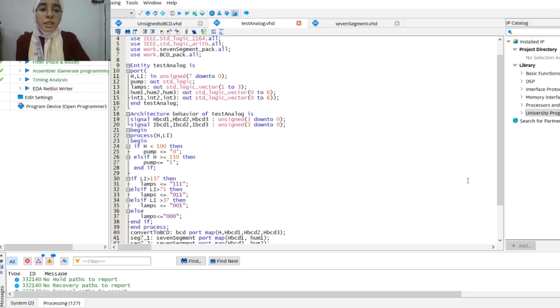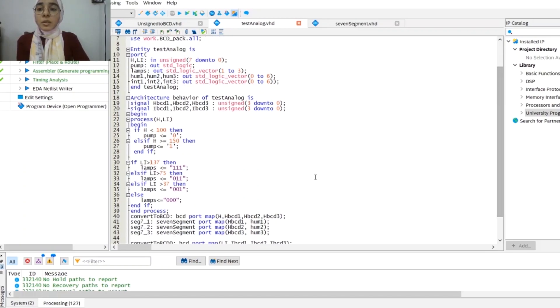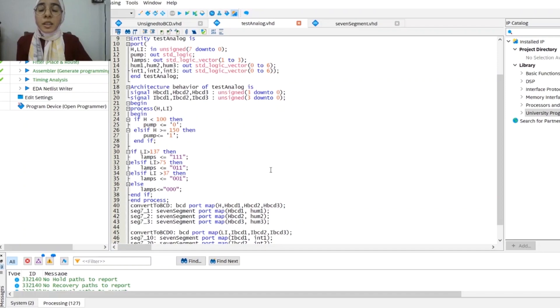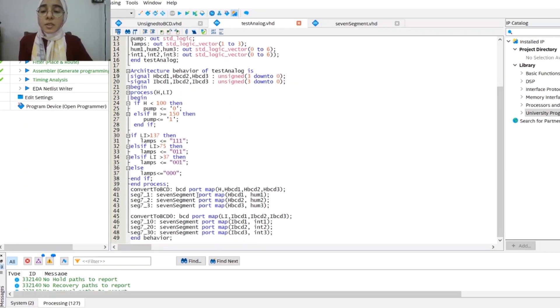Inside the architecture of the code we have a process with conditions on the reading of the sensors. For example, for the humidity sensor, if the value is below 100, the pump will not work. If it exceeds 150, the pump will turn on. The same is done for the light intensity sensor.